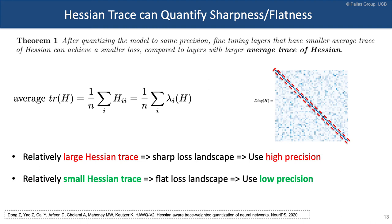If you have a relatively large Hessian trace, the loss landscape is sharp and you don't want to perturb that convolution — keep it at high precision, for example INT8. If you have a relatively small Hessian trace, the loss landscape is flat, and you can quantize that layer to lower bit precision.